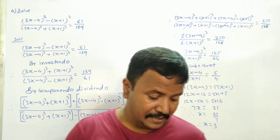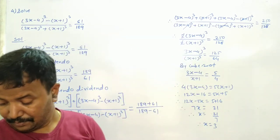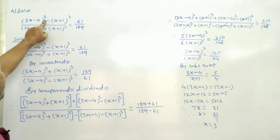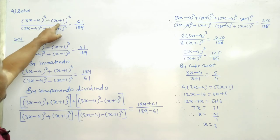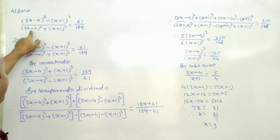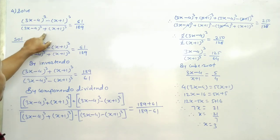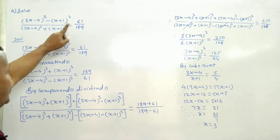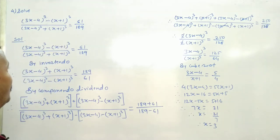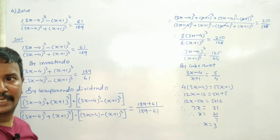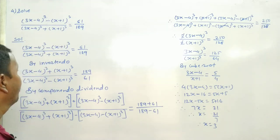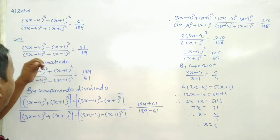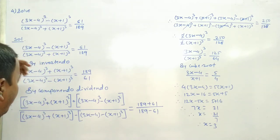See, now the last problem: (3x+4)³ minus (x+1)³ divided by (3x-4)³ plus (x+1)³ is equal to 61 upon 189. By inverting this equation to its inverse.